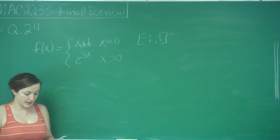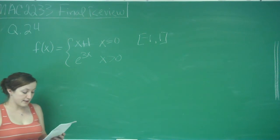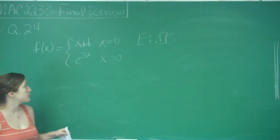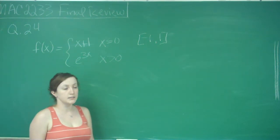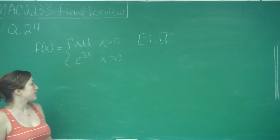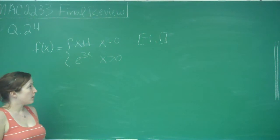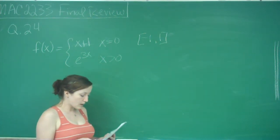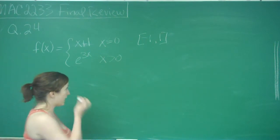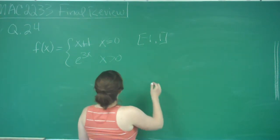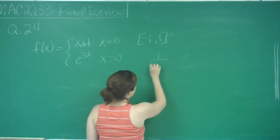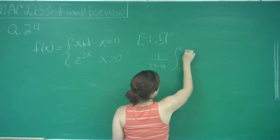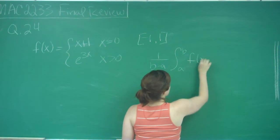This is question number 24, and it asks us to find the average value of the piece-wise function f of x, which equals x plus 1 when x is less than or equal to 0, and e to the 3x when x is greater than 0, on the interval from negative 1 to 1. What we have to remember is what average value is in terms of our integrals: it's 1 over b minus a times the integral from a to b of f of x dx.